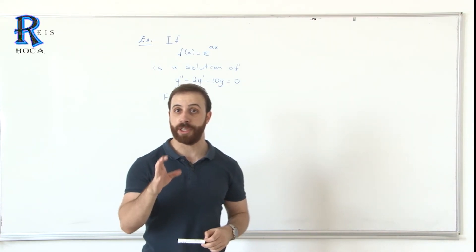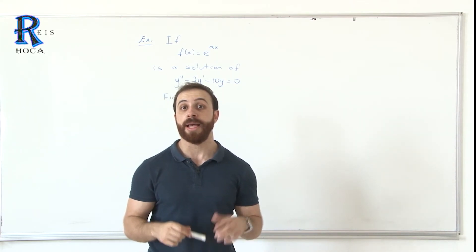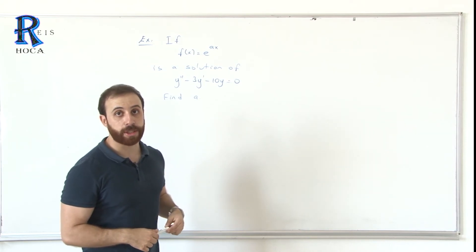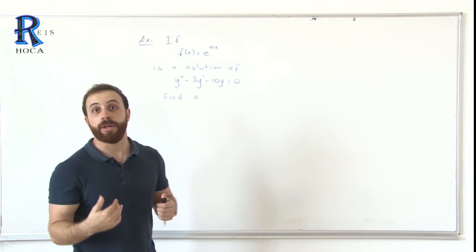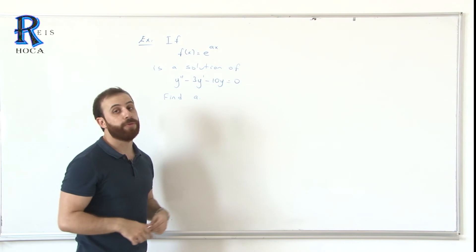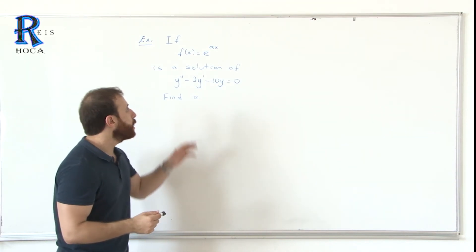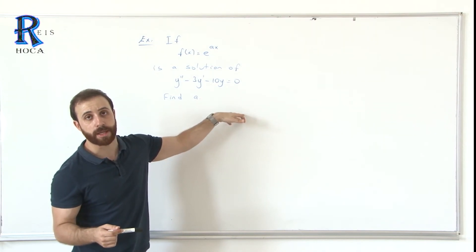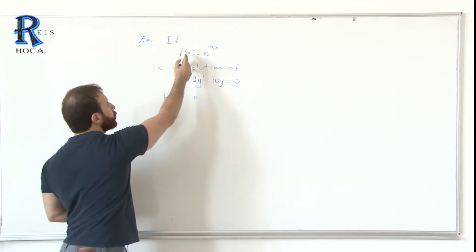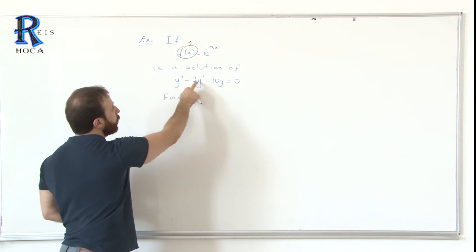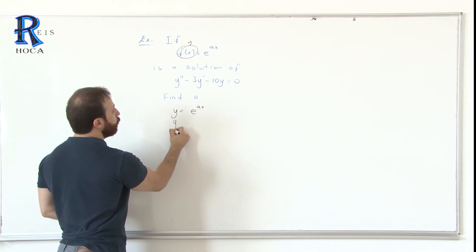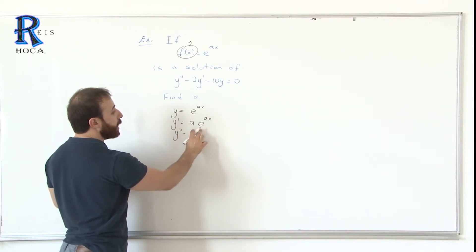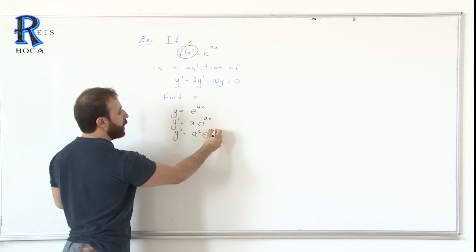Another example about the solution of a differential equation. In this question, we know that the given function is a solution and there is a constant A that we don't know. The question says: find A if this function is a solution of this differential equation. The function is y equals e^(Ax). We need the second and first derivative. y prime equals A·e^(Ax), and the second derivative y double prime equals A^2·e^(Ax).